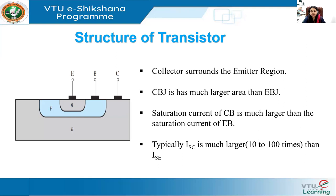If the emitter and collector are reversed — that is, if the collector-base junction is forward biased and the emitter-base junction is reverse biased — the device operates in what is called the reverse active mode. The resulting values of alpha and beta in this mode are represented as alpha-R and beta-R, indicating the reverse gain, which are much lower than alpha and beta in the normal active mode.